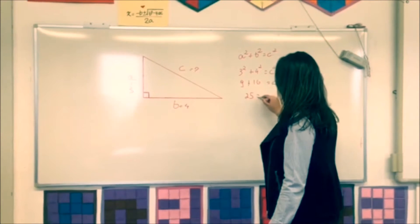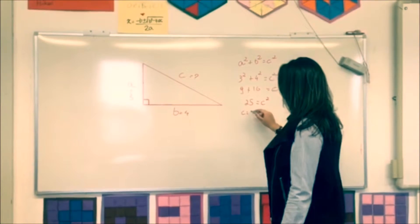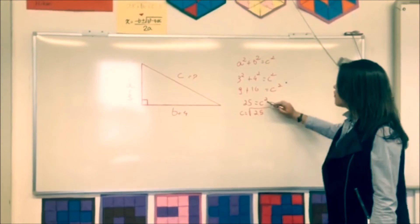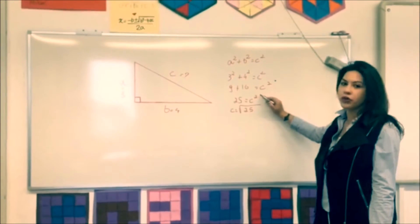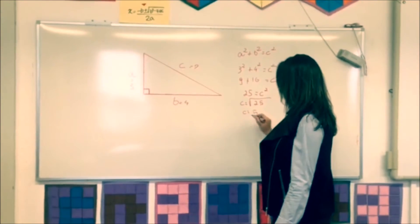25 equals C squared. C is equal to the square root of 25. Why square root? Because if here is power of 2, the opposite is the square root. So C equals 5.